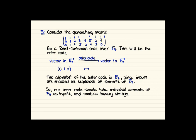So what we do when we're encoding using this Reed-Solomon code is we're starting with a vector in F8^3, applying that outer code, the Reed-Solomon code, and we obtain a vector in F8^8.